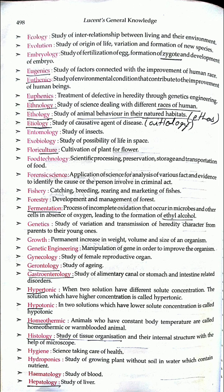Hypertonic and hypotonic: 'hyper' means more and 'tonic' means solution, so a hypertonic solution is a concentrated solution. Hypotonic is a solution with less concentration. Two solutions can be hypertonic or hypotonic with respect to each other. Homeothermic means animals that have a constant body temperature — warm-blooded animals. Mammals are warm-blooded and homeothermic; they can control their own temperature.